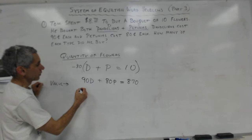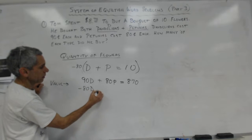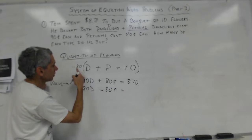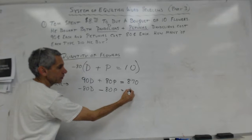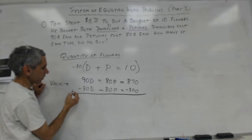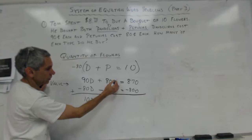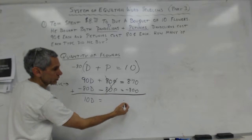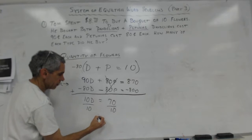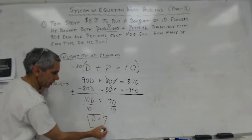So I have negative eighty D, negative eighty P, negative eight hundred. And then I draw my line, I'm going to add them together. So I have ten D equals, these cross out, equals seventy. So divide by ten, D is equal to seven. So I know that Tom bought seven dandelions.